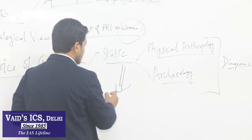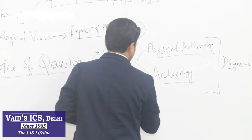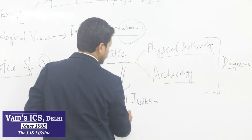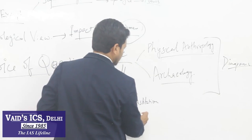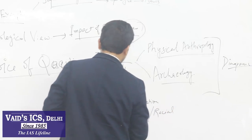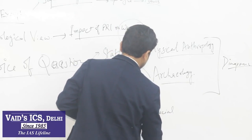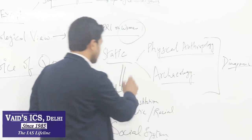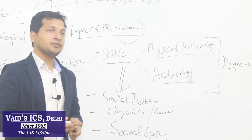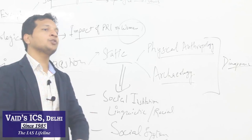Other somewhat static areas include social institutions — marriage, family, kinship. Similarly in Paper 2, the linguistic chart, linguistic classification, racial classification and Indian social system are quite static. However, tribal India is quite dynamic. No matter what you write, it's very difficult to convince anthropologists on your view of tribals, as they will know much more. You should cover each and every part of the syllabus, but certainly attempt the static areas on the first instance.